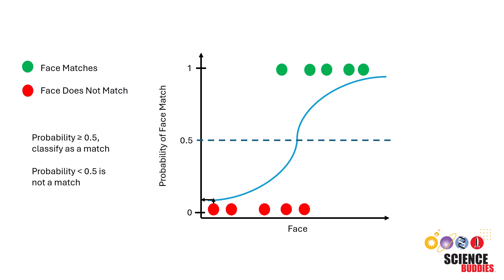Since the probability of this point being a match is less than the threshold of 0.5, the model will classify this point as not a match, which would be correct.